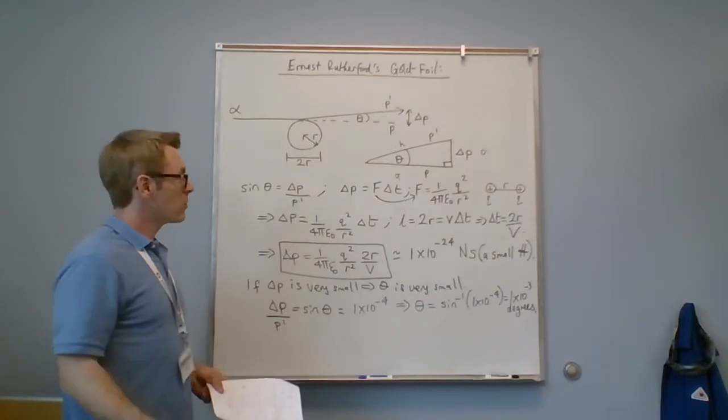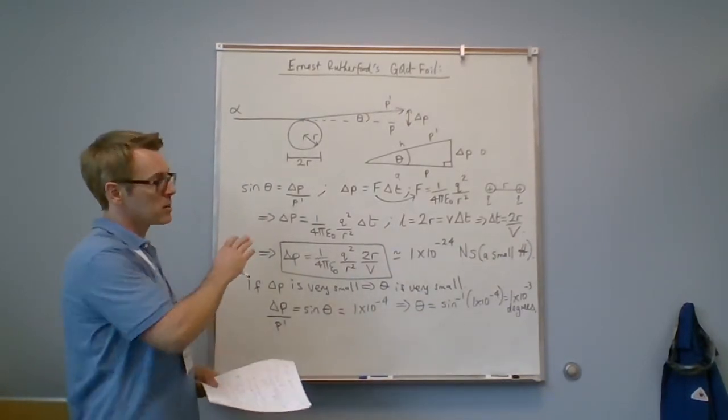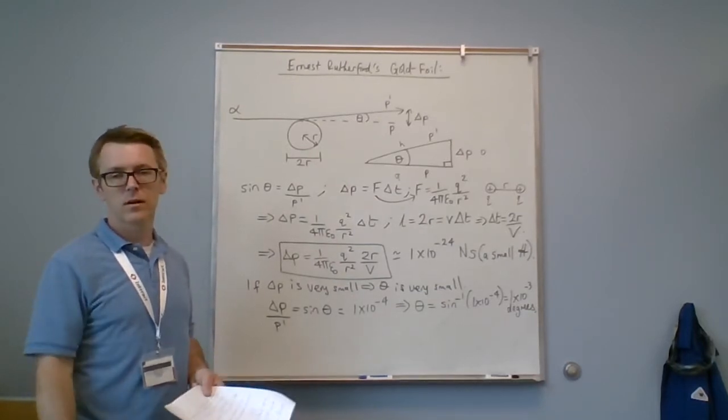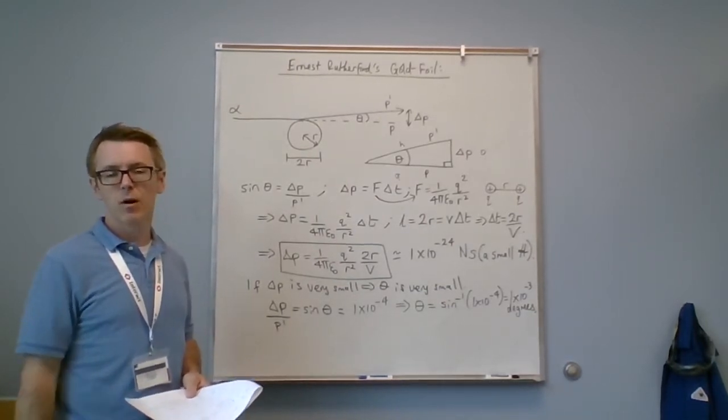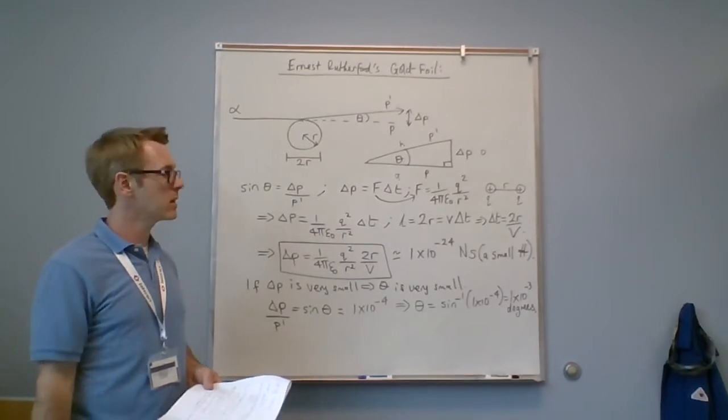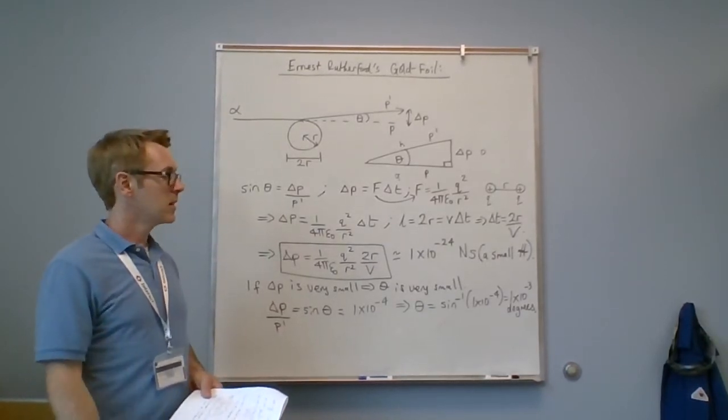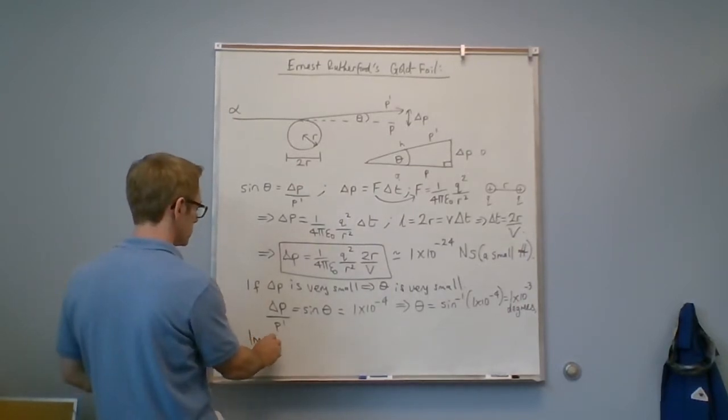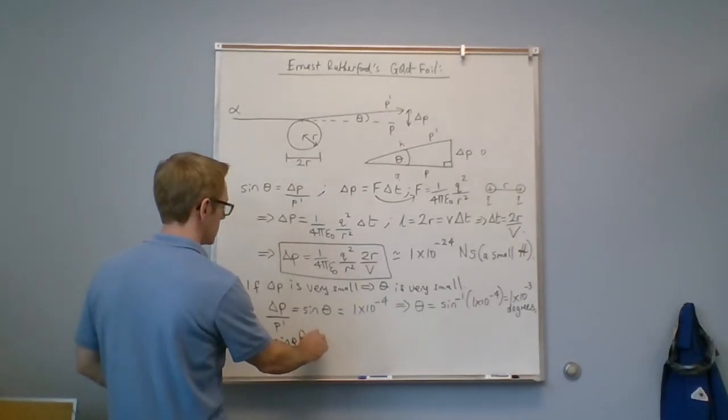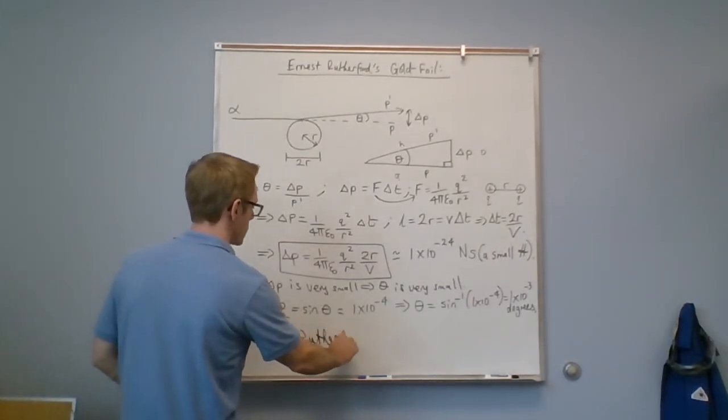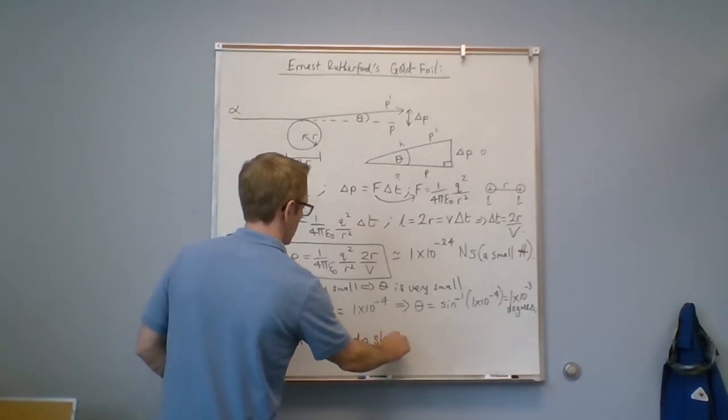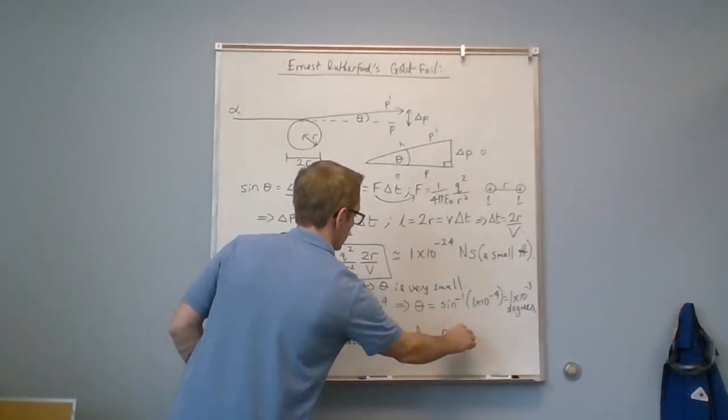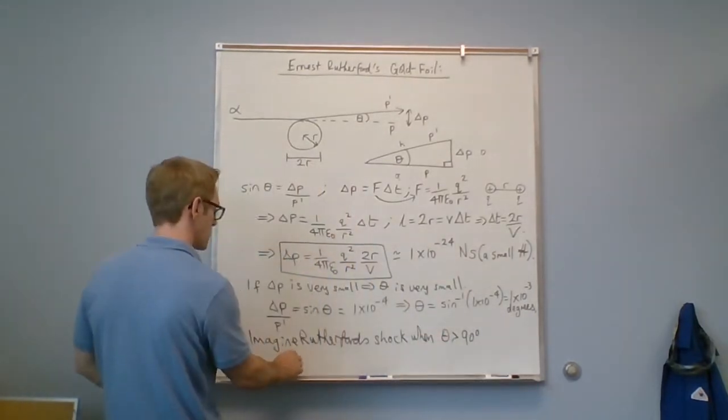If you read about Rutherford's gold foil experiment, this is what he observed for the most part, along with Geiger and Marston, who were collaborators on the project. Imagine how surprised Rutherford and his collaborators were when, very seldomly, they saw a large angle. Imagine Rutherford's shock when theta greater than 90 degrees was occasionally observed.